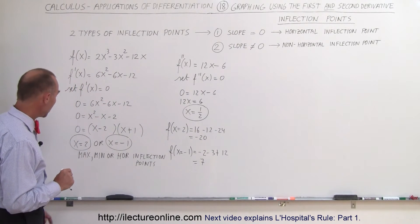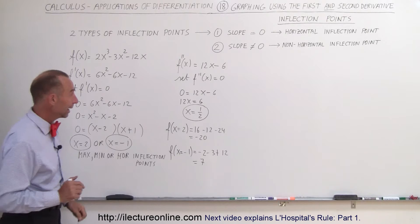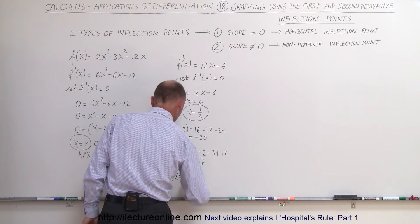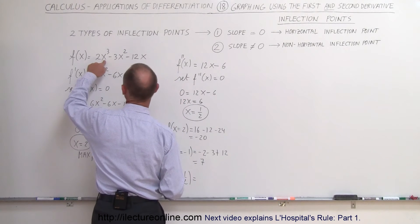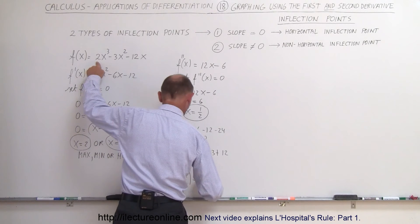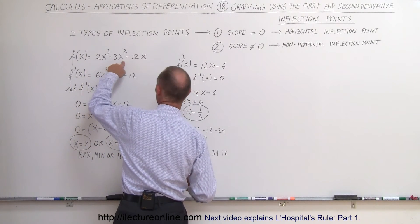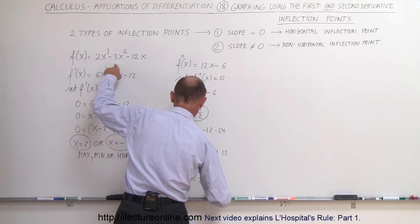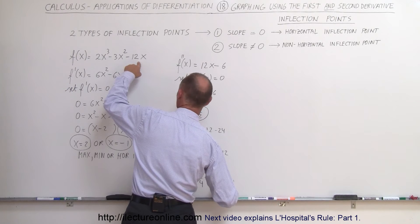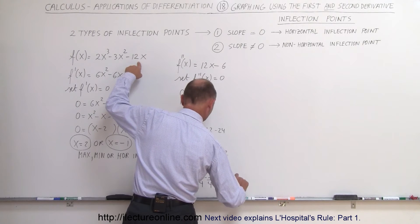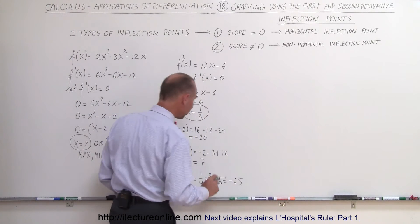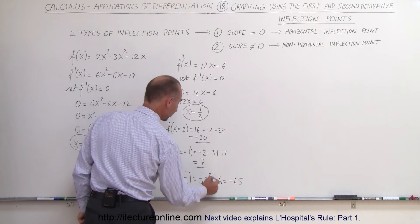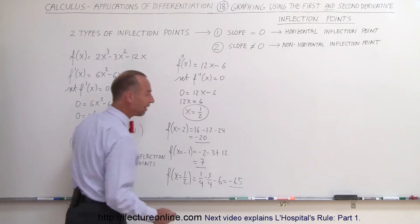And finally, we plug in the value x equals 1 half. f of 1 half is equal to: 1 half cubed is 1/8, times 2 is 1/4. 1 half squared is 1/4, that's minus 3/4. And 1 half times this would be minus 6. So, it would be minus 6.5. Those are the three corresponding y-values: minus 20, positive 7, and minus 6.5.